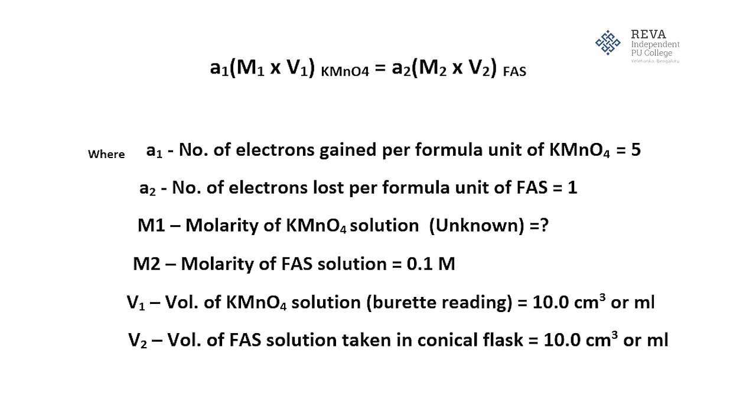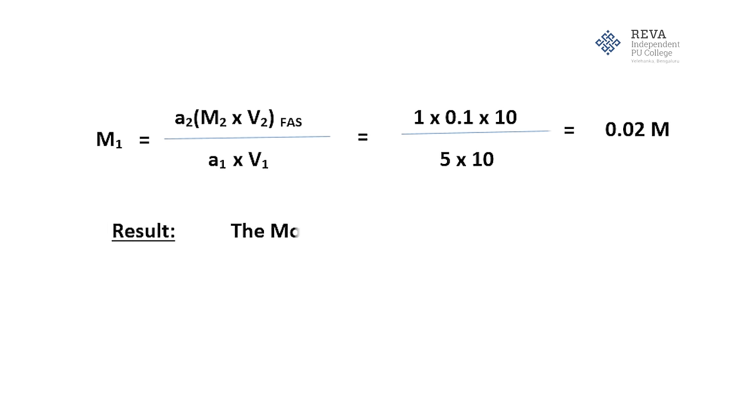Thus, substituting these values in the formula, M₁ is equal to M₂V₂a₂ divided by a₁V₁. Now, substitute all the values and we will find out the molarity of unknown KMnO₄ solution. The final result is the molarity of KMnO₄ obtained from the formula is equal to 0.02 molar.